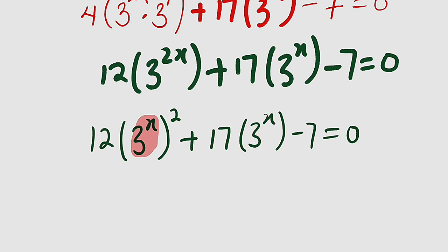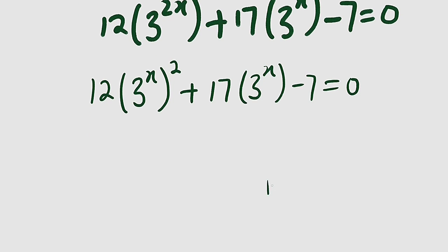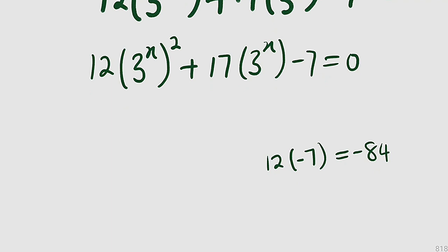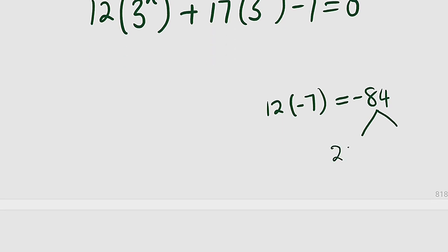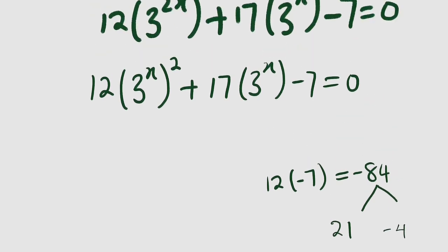So how can we factorize it? We can first multiply the leading coefficient, which is 12, by the constant term, which is negative 7, and this will give us negative 84. Let us think of two numbers we can multiply together to get negative 84, but when we add them together we get positive 17. The numbers are 21 and negative 4: multiply them together you get negative 84, and when you add them together you get 17.